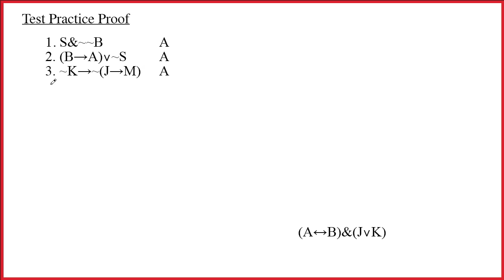We see that line 1 has an ampersand as its main connective. We might as well break that up, and we get s and tilde tilde b, both by one ampersand out. Alright, that was easy.